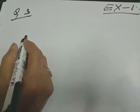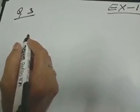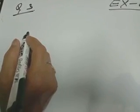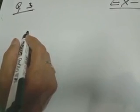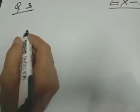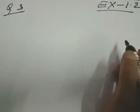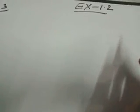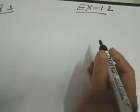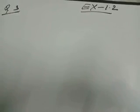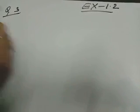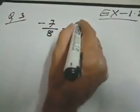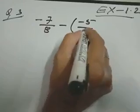Now come to question number 3. What rational number should be added to minus 5 by 7 to get minus 7 by 8? Suppose I will tell you: what number you will add with 5 to get 10? First, from the second number you will subtract the first number. Similarly, by the same process, we write first minus 7 by 8, then subtract what? Minus 5 by 7.